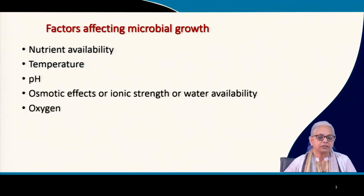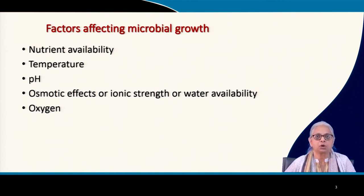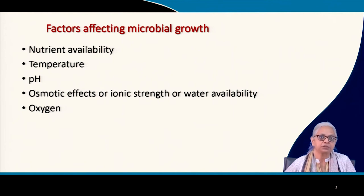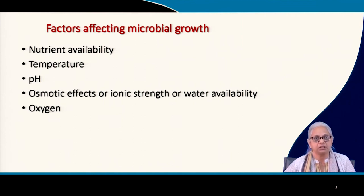We have already seen the factor of nutrient availability and gone through the law of the minimum. We will now move to temperature, pH, osmotic effects — which can also be considered as ionic strength, water availability, or water activity — and finally oxygen.